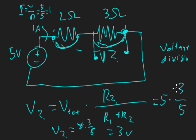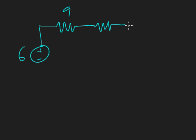That was a bit of an easy example, so I'll step it up a bit. Using less obvious values, say 6 volts, this resistor is 9 ohms, and this one is 2 ohms.